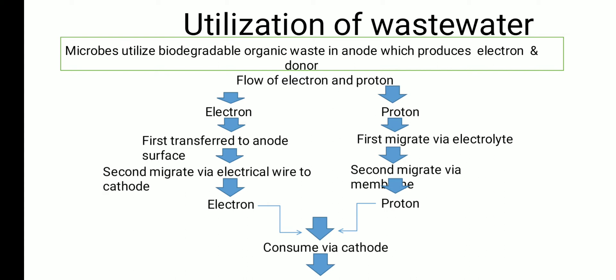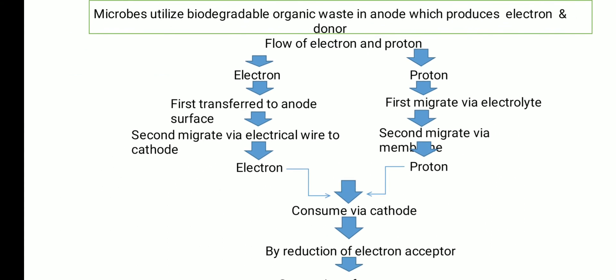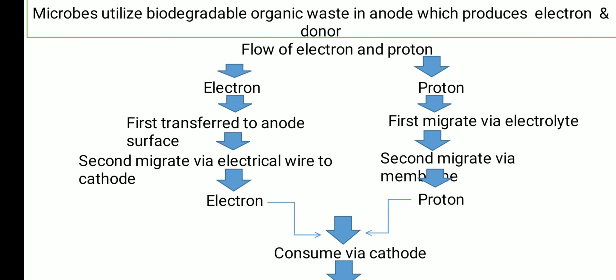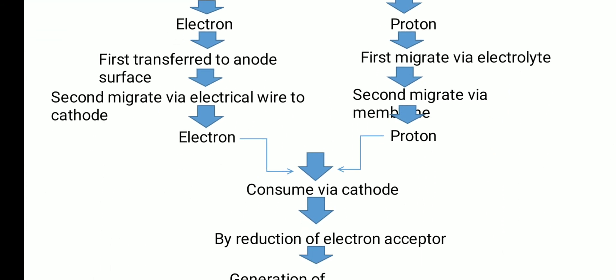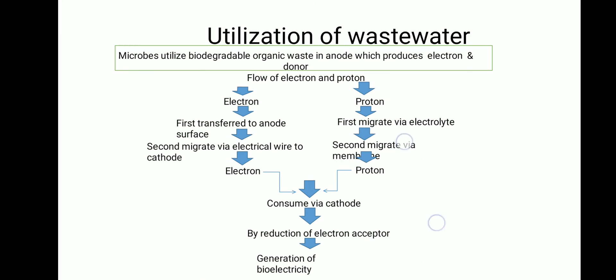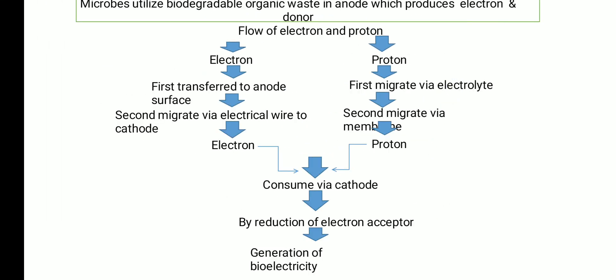Donors here means protons. The flow of electrons and protons is as follows: electrons are produced from the organic materials in the anode chamber, first transferred to the anode surface, then migrate via external electrical wires to the cathode. Protons migrate via the electrolyte and through the membrane to the cathode chamber, where they are consumed by reduction of the electron acceptor, resulting in the generation of bioelectricity.